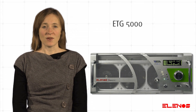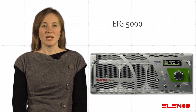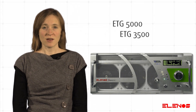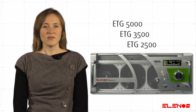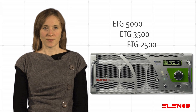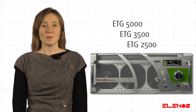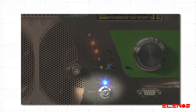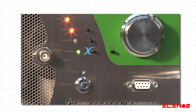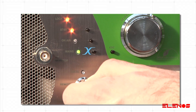To set the transmission mode in ETG 5000, ETG 3500 or ETG 2500, some very simple operations must be performed. We must ensure that the transmitter is in local mode by checking that the blue LED is on. If not, turn the key to the local position.